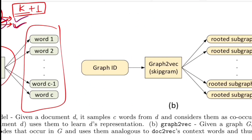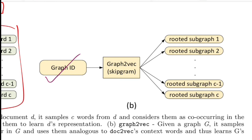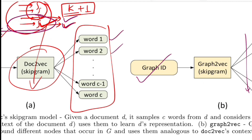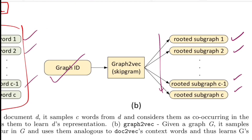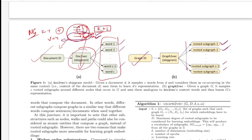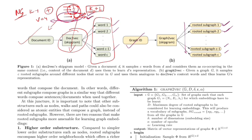The idea for graph2vec is very similar to doc2vec. You have a graph ID — the analogy is graph as sentence or paragraph — and in the output you want to predict all the subgraphs that occur in the vocabulary, just as doc2vec predicts all the words. Here, the rooted subgraph is considered the smallest entity with equivalent structure and semantics to the entire graph. If given a graph you are able to predict these smallest units, you will eventually learn embeddings for the entire graph.